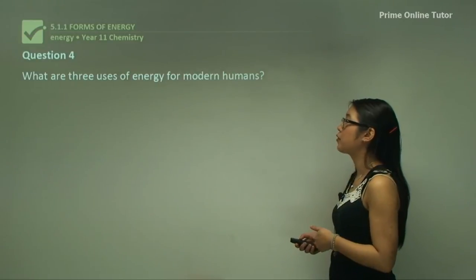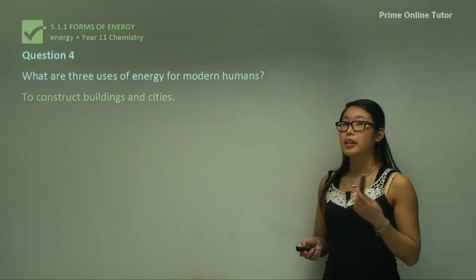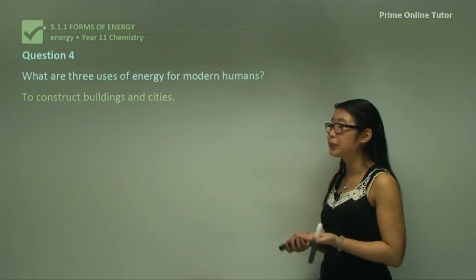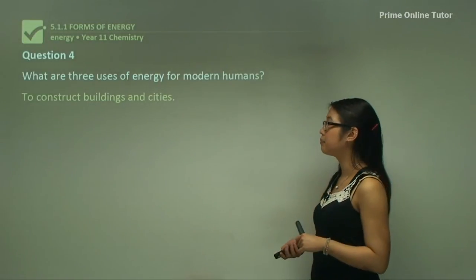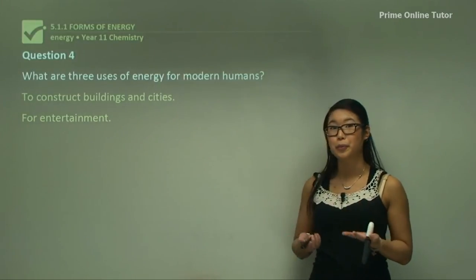Question four, what are the three uses of energy for modern humans? So we like to construct things. We like to build buildings and build cities to live in. We also like entertainment. We like to watch TV and we like to play games and go on the computer.